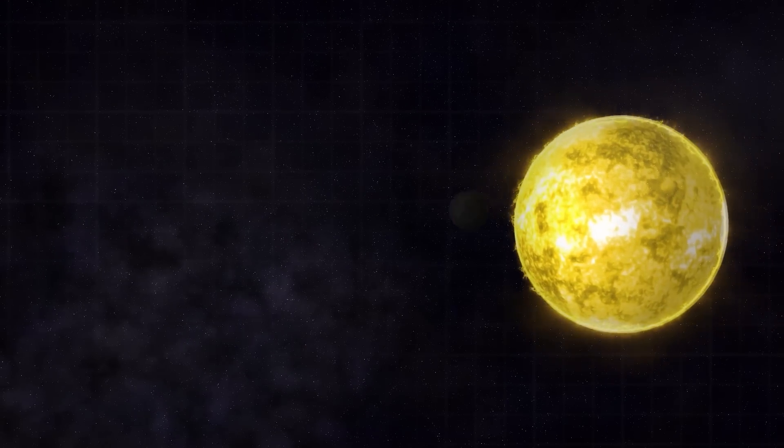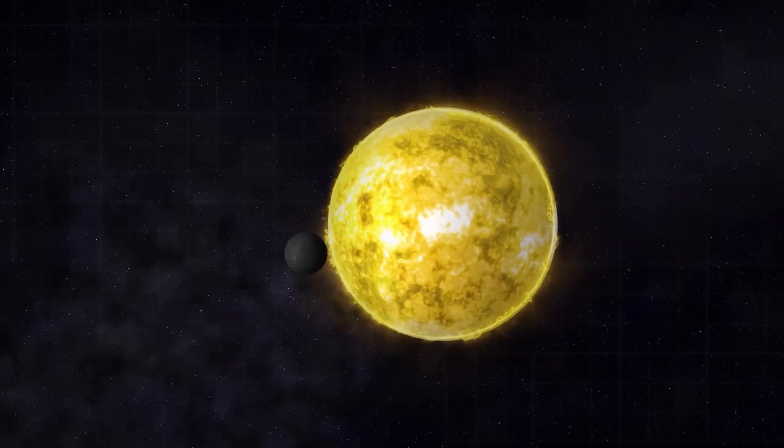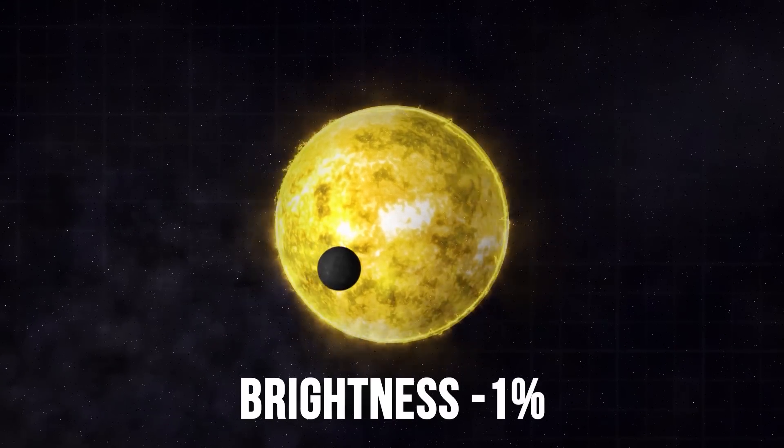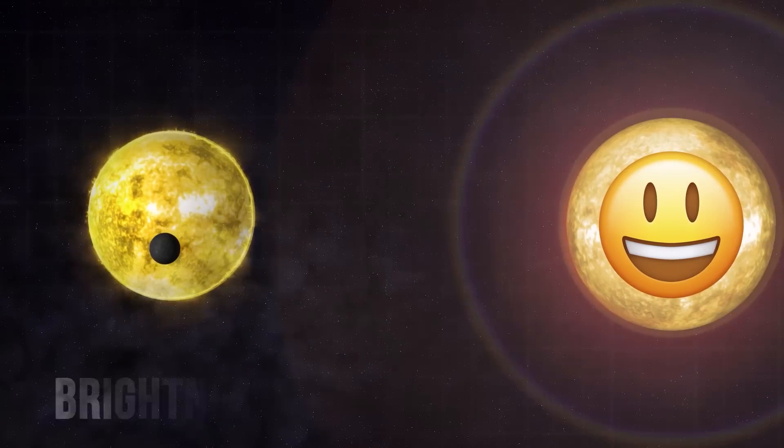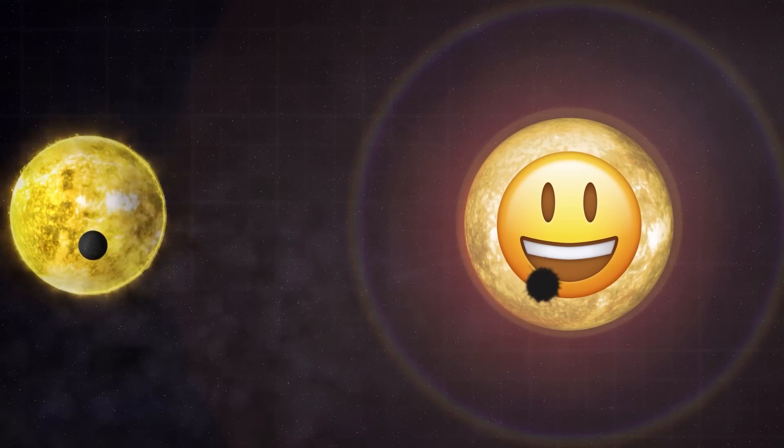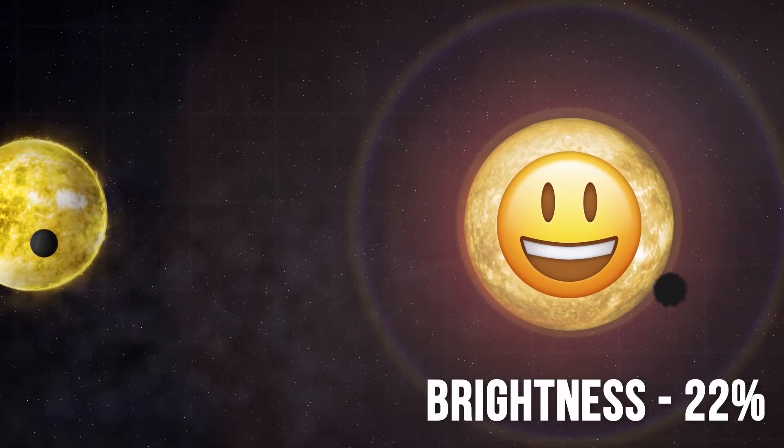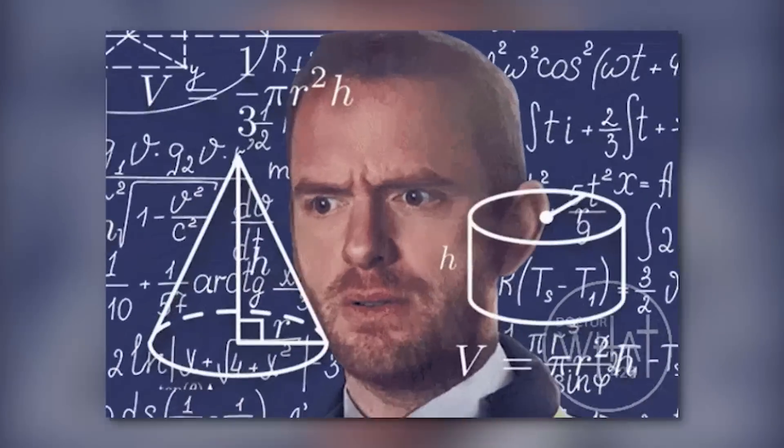When an exoplanet moves in front of a regular star, the star's brightness decreases by no more than 1%. However, something weird is going on around Tabby's star. Its brightness repeatedly drops by a totally unthinkable 22%. Scientists are confused.